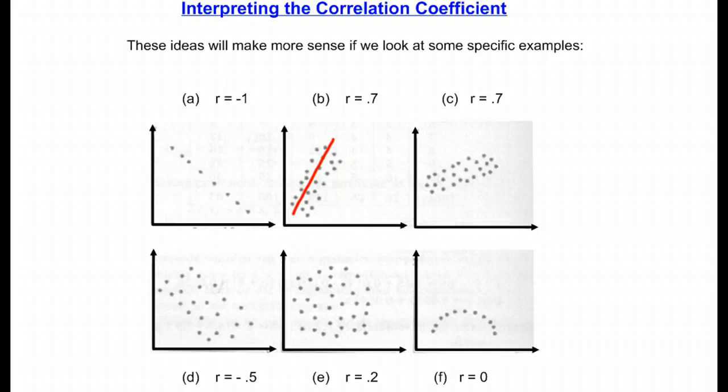For graph c, notice I gave graph c the same r-value. See, the steepness of the line has nothing to do with the size of the number. It's not like a slope. But, the 0.7 is positive because, again, y is going uphill as x is increasing. And, again, it looks about equally scattered as the one before. So, I figured 0.7 was a reasonable size.